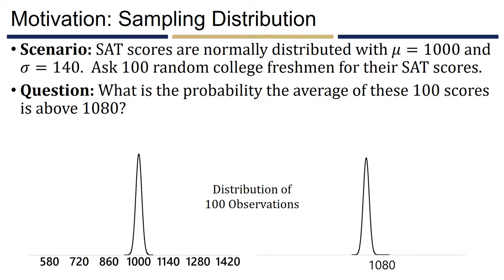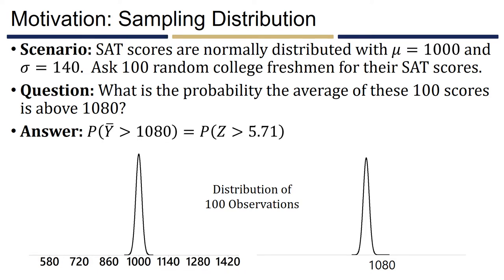Continuing the pattern to a sample of 100 college freshmen, that normal distribution condenses even more. Almost all area is within about 50 points of 1,000, and the area above 1,080 is essentially non-existent. Standardizing 1,080 with n = 100 gives a z-score of 5.71 — a highly unusual event. The probability that the average of 100 SAT scores exceeds 1,080 is 5.51 × 10⁻⁹, almost 6 standard deviations above what we would expect.